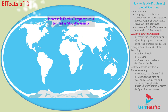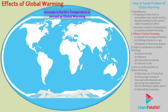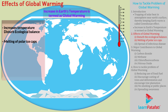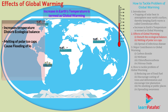What are the effects of global warming? It increases the temperature of earth's surface and disturbs the ecological balance. Continuous increase in temperature may lead to melting of polar ice caps, which can cause flooding of low-lying areas all over the earth.